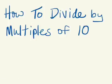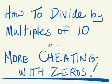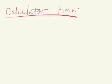Today's lesson is how to divide by multiples of 10, or more cheating with zeros. For this activity you're going to need a calculator — that could be a calculator on your computer, an iPad, iPod, phone, or just a good old school calculator. Get a calculator and press pause.